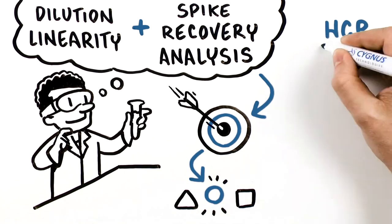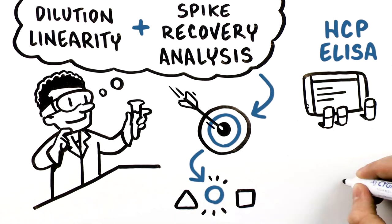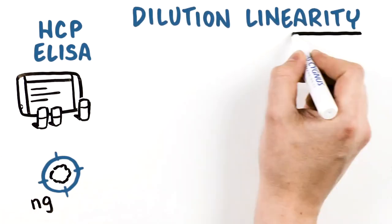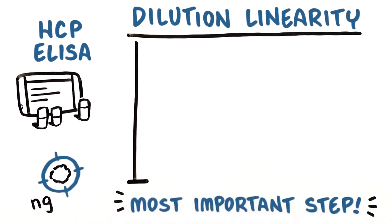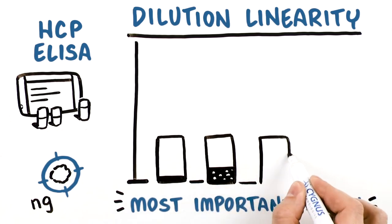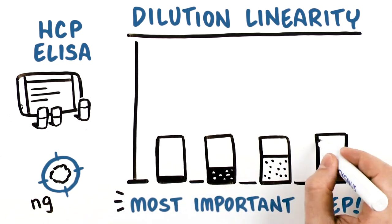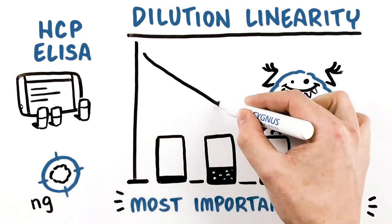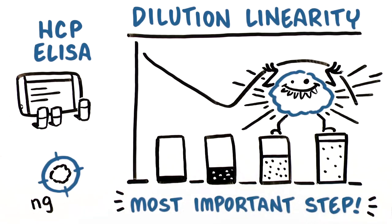And while downstream tests like an HCP ELISA can test for nanogram levels of HCPs, dilution linearity is the most important step in assay qualification since it serves as the first-line diagnostic tool to assess whether a downstream purification process actually enriched some bad-actor host cell proteins.